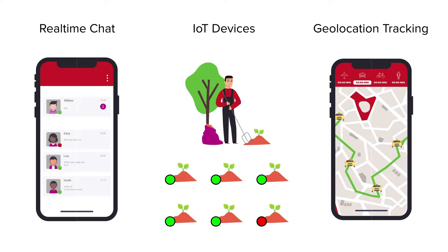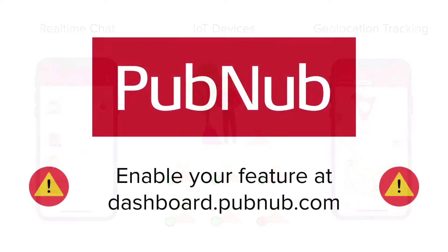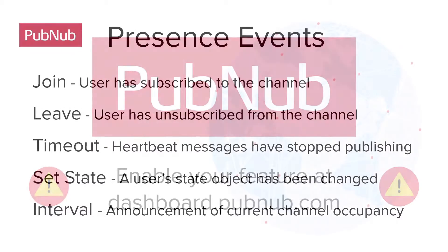This Swift tutorial will show you how to enable the Presence functionality in your Swift application. Before you get started, you must enable the Presence feature for your API keys in your PubNub dashboard. By default, the Presence feature is disabled. Visit dashboard.pubnub.com to enable the Presence feature for your app.